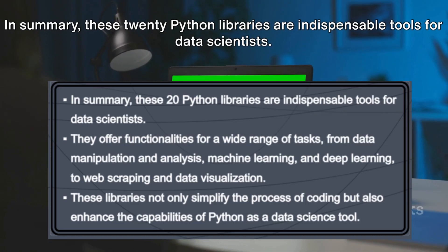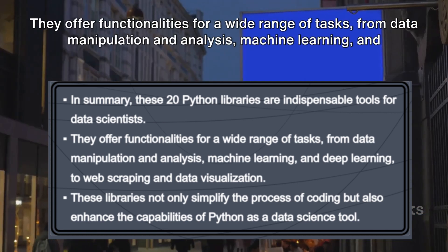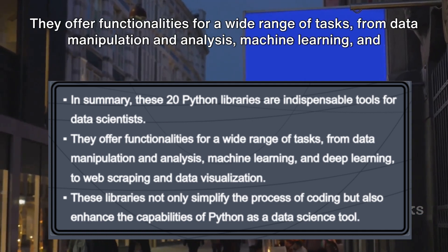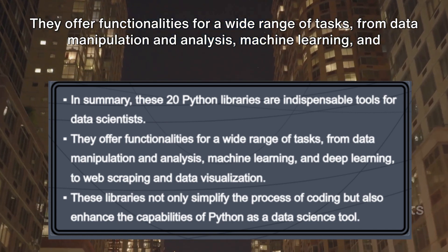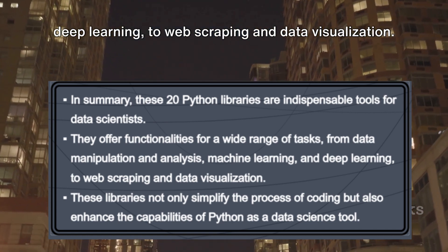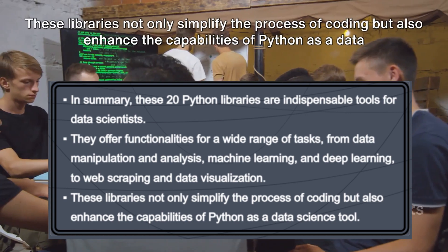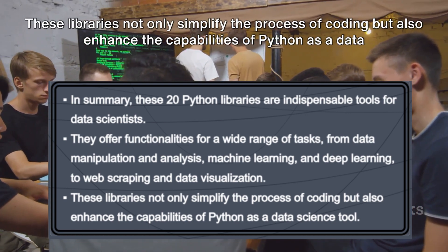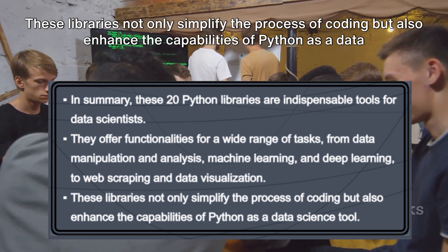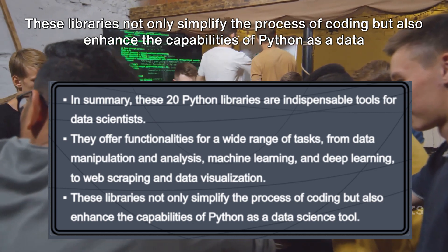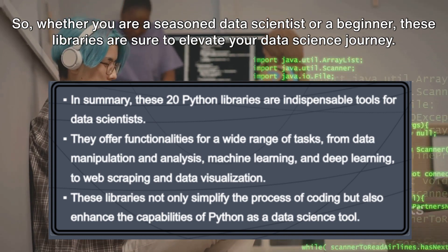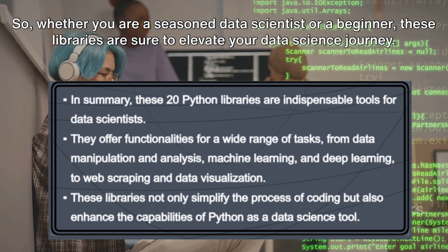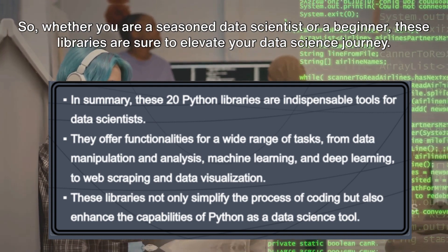In summary, these 20 Python libraries are indispensable tools for data scientists. They offer functionalities for a wide range of tasks — from data manipulation and analysis, machine learning and deep learning, to web scraping and data visualization. These libraries not only simplify the process of coding but also enhance the capabilities of Python as a data science tool. Whether you are a seasoned data scientist or a beginner, these libraries are sure to elevate your data science journey.